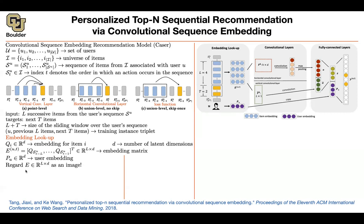If you want to use CNNs, the image is going to be this embedding matrix — we treat that as an image. The question is: what is a pixel? Is it this dimension or the other dimension that counts as pixels? Depending on how you interpret pixels, you define your convolutions, which gives you two routes that define your filters. For the horizontal convolutional layer, you're interpreting the first dimension as the pixel dimension.